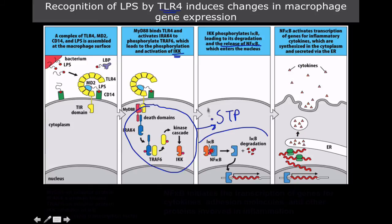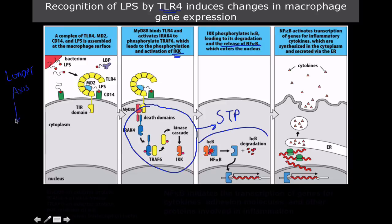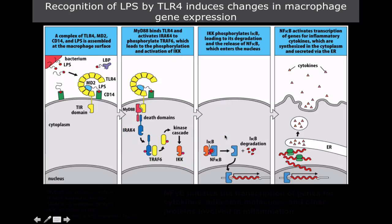One thing to notice about long, complicated signaling cascades — like clotting, hormonal axes, or this signal transduction pathway — is that the longer the cascade is, the more fine-tuning and precision we have. That's why these pathways are so long and complex: we want to precisely control gene expression for damage control. We want to kill pathogens without hurting our own cells.